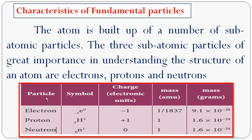Now come to the properties of fundamental particles. Electron has the symbol E⁻₁ and it has the charge minus 1. Its mass is 1/1837, expressed in grams: 9.1 × 10⁻²⁸. The second one, proton, has the symbol H¹₁, also called as proton, charge plus 1, mass 1, expressed in grams: 1.6 × 10⁻²⁴. The third one, neutron, symbol N¹₀, charge 0, mass 1, expressed in grams: 1.6 × 10⁻²⁴ gram.